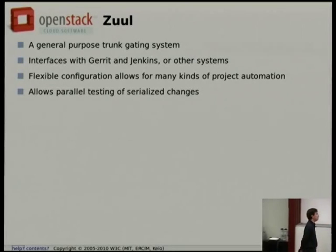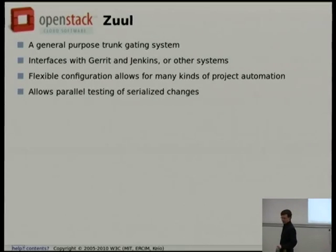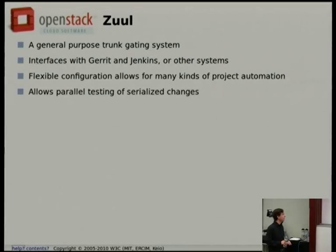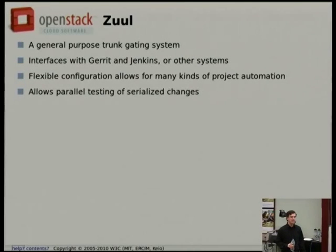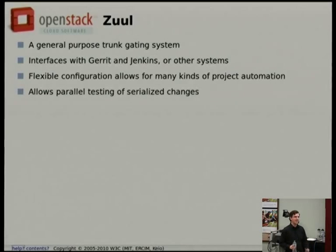The engine we use to drive all of this is called Zuul — something we wrote within the OpenStack infrastructure project. It interfaces with Gerrit and Jenkins or other systems. It's very flexible and allows for a lot of different kinds of project automation, some of which we didn't even anticipate when we wrote Zuul. Because we didn't build in too many assumptions about what we were going to do with it, we found we could do a lot of things with it. It also allows parallel testing of serialized changes — that's basically how we're able to test every single change to the project and still keep up some kind of velocity.